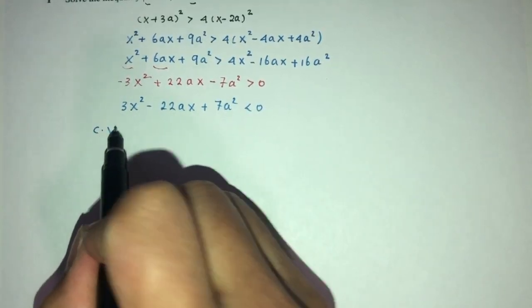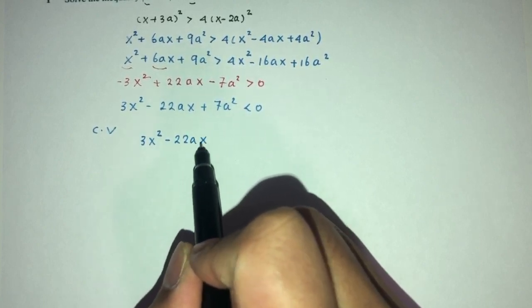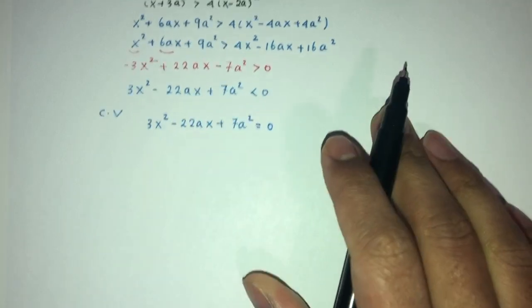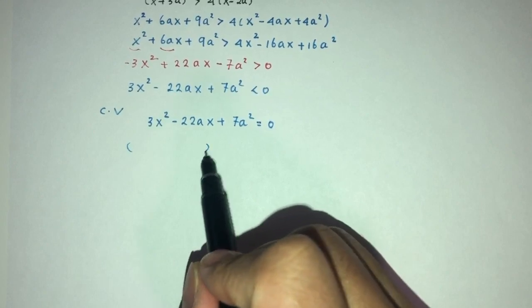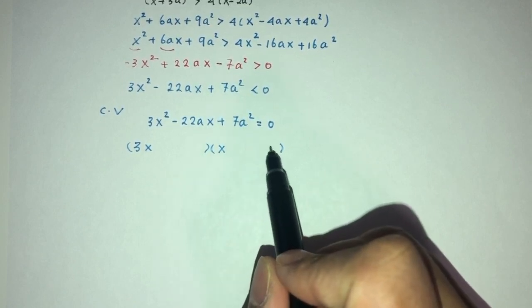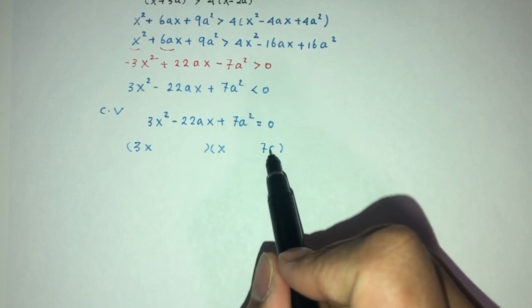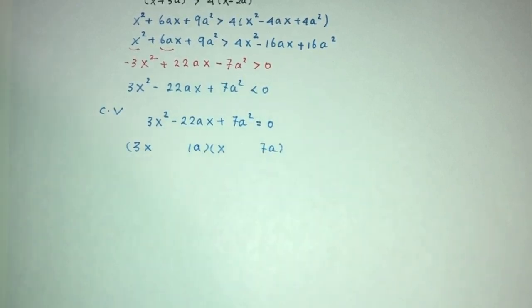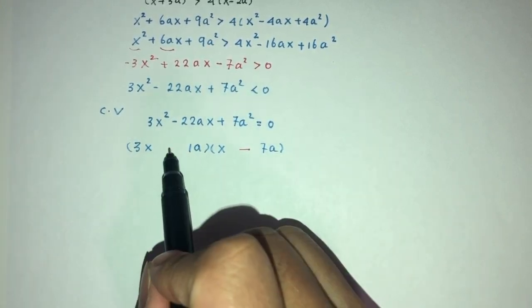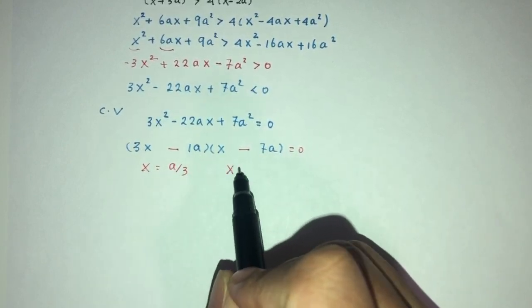We need to find the critical values by solving 3x² − 22ax + 7a² = 0. Factorizing: we need −21 − 1 to get −22, so x = a/3 and x = 7a.